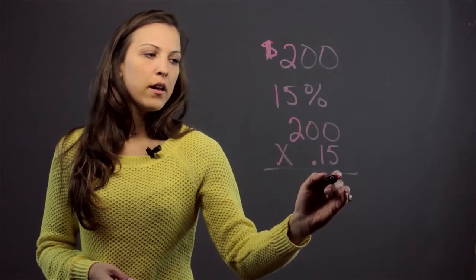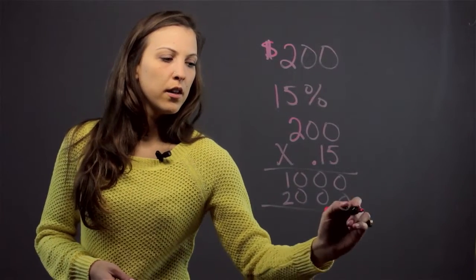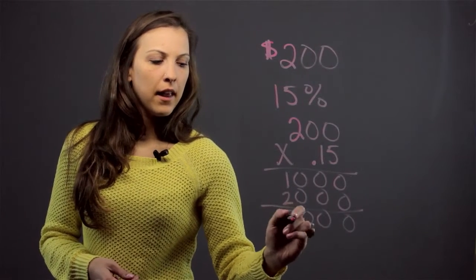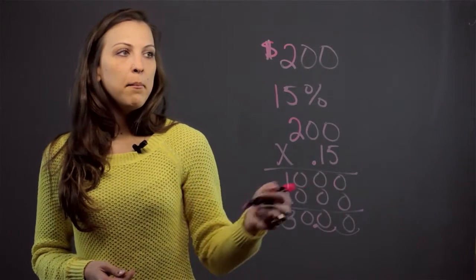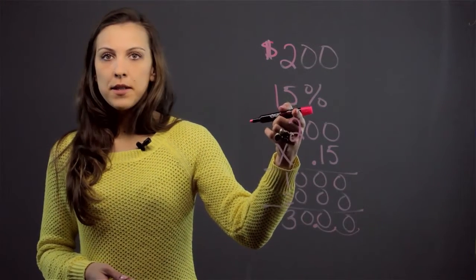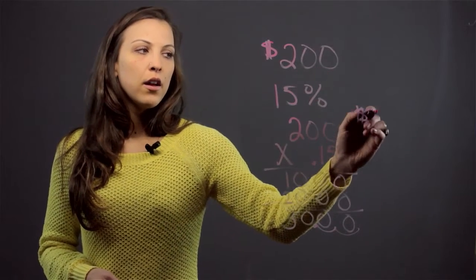So when we do that we get 0010, 002. We add this up and when we move our decimal back two spaces we get 30, meaning that if someone received a 15% commission on something that costs $200 they would receive $30.